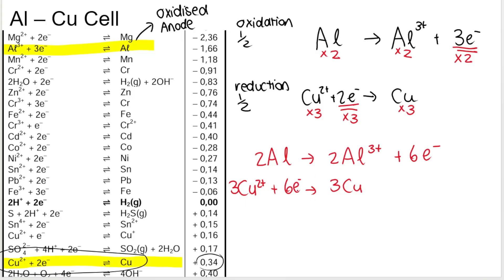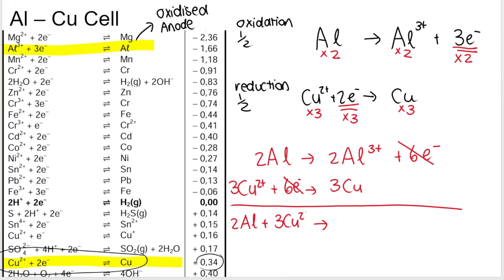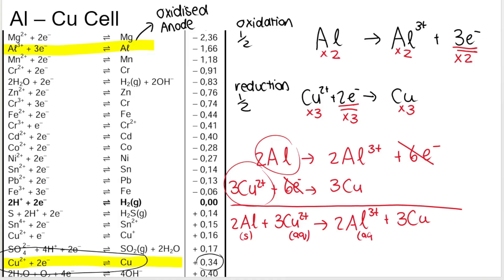I line up my arrows and double-check I've done it correctly. Then I cancel my electrons and rewrite everything on the left-hand side, then everything on the right-hand side. You may include phases, but in marking we often ignore them. What matters most is: did you balance the electrons, cancel them, and correctly rewrite everything on both sides?